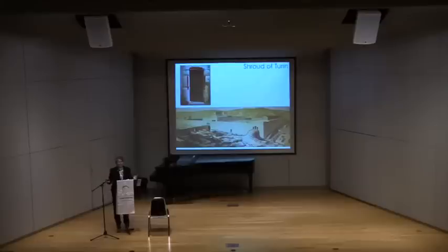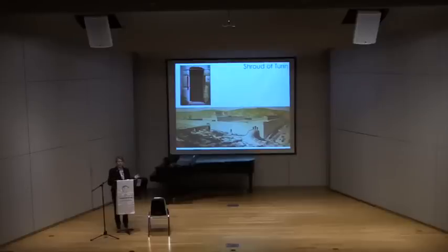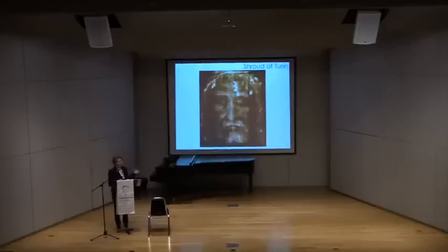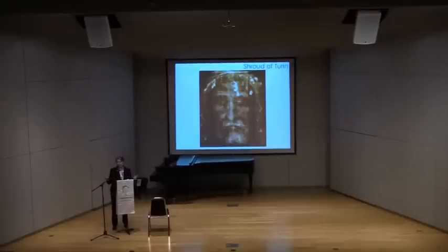Jesus had his final meal with his friends — the Last Supper — during which he instituted the Eucharist. He then went to the Garden of Gethsemane, where his passion begins. The first Sorrowful Mystery of the Rosary is the Agony in the Garden, where Jesus prays passionately about undertaking the will of the Father. As he prays, Judas comes with the army from the temple — Jewish guards sent by the Jewish leaders — who arrest Jesus and take him in chains before the Sanhedrin, the ruling group of Pharisees, Sadducees, and leaders.